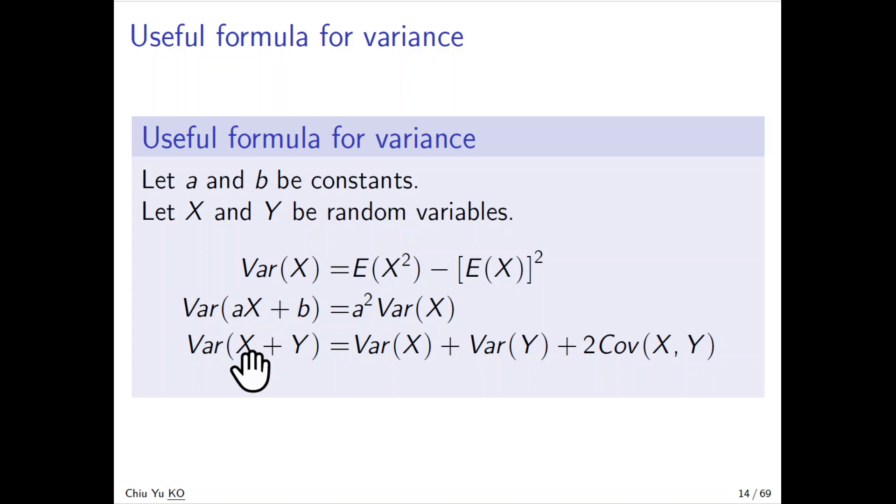If X and Y are independent, then it becomes a linear property, Var(X + Y) = Var(X) + Var(Y). But most of the time, if they're not independent, this covariance will be positive or negative but will not be zero.